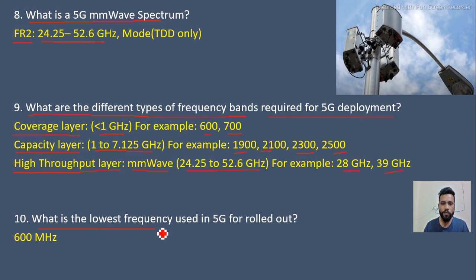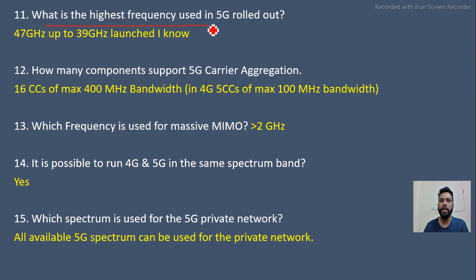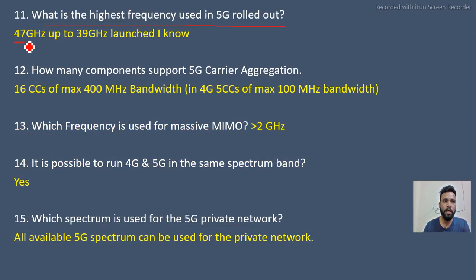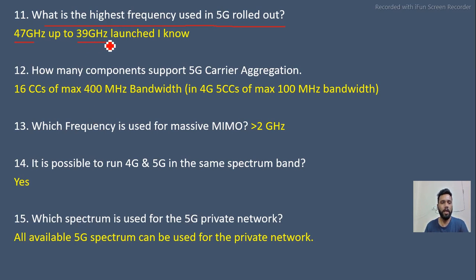What is the lowest frequency used in 5G rollout? As per my understanding, 600 MHz is used as the lowest frequency band for the coverage layer. What is the highest frequency band used in 5G rollout? I believe 47 GHz can be used, though I'm not certain if it's already deployed. However, 39 GHz is already deployed and I have personally worked with it.